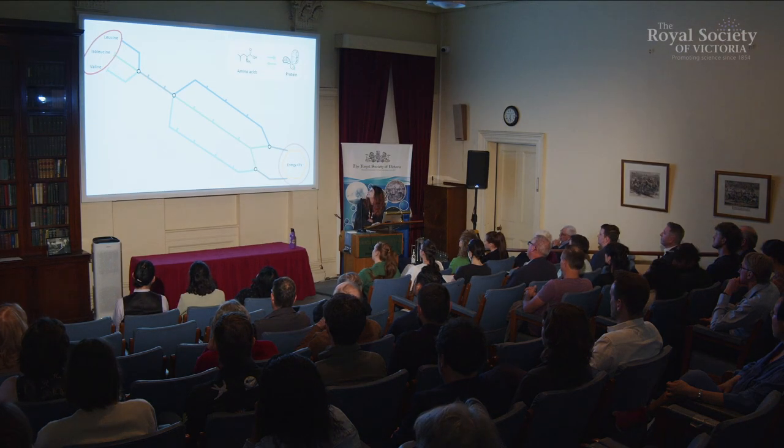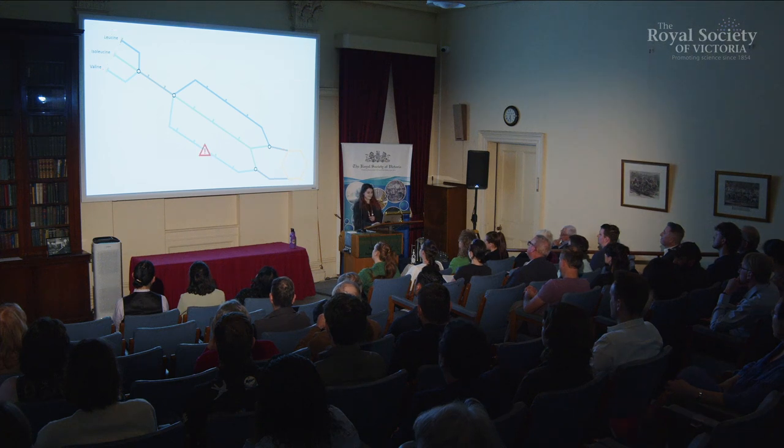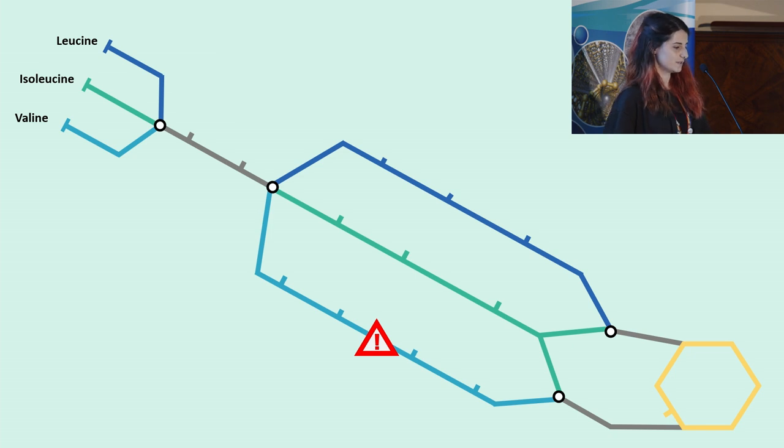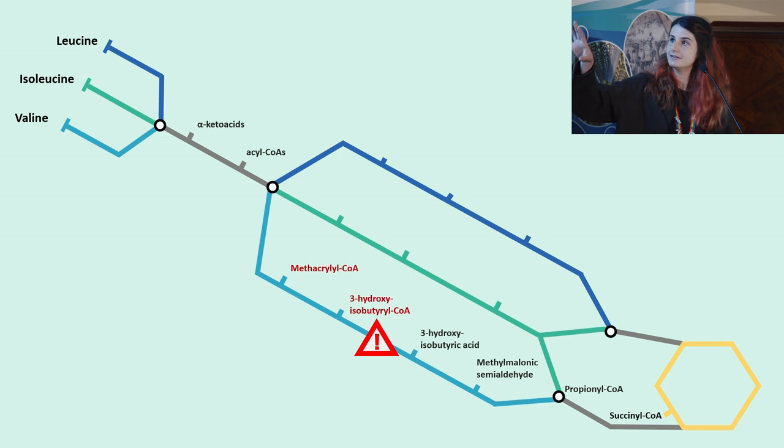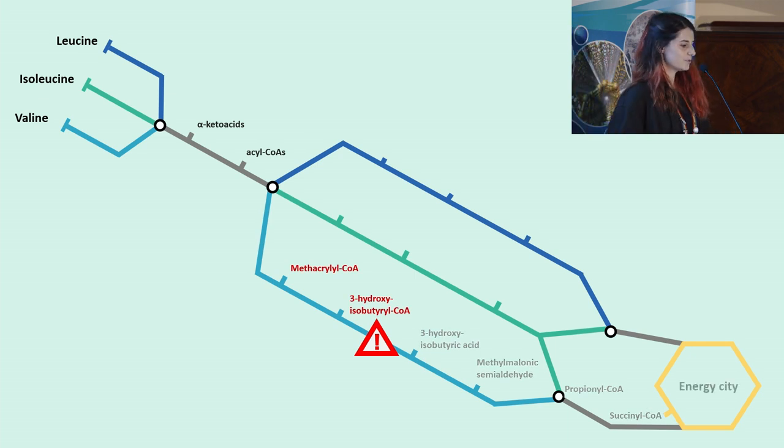And I had some nice pretty pictures for that. But what happens if there is an obstruction on the track? Well, metabolic disease occurs. So not only is there a buildup behind the obstruction there in red, but also there's a deficit at the end of the track.